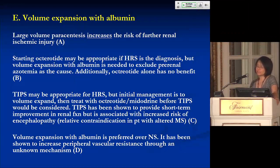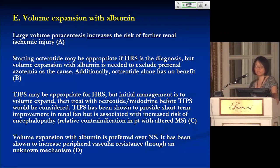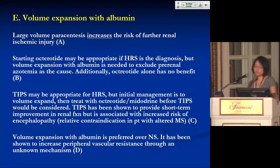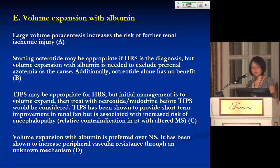If you thought HRS was the diagnosis, starting octreotide may be appropriate, but you basically have to make the diagnosis of HRS first. Volume expansion with albumin is needed to exclude pre-renal azotemia as the cause. Octreotide alone has no benefit in HRS. TIPS might be appropriate for HRS, but again, the initial management is to volume expand, then attempt to treat with octreotide and midodrine before considering TIPS.